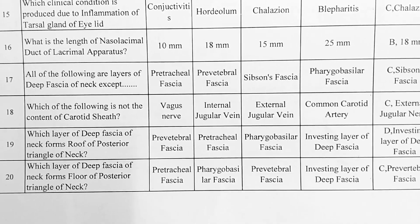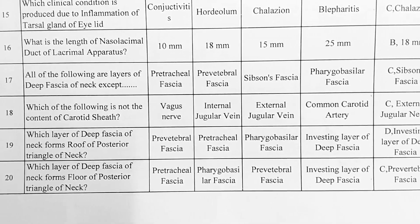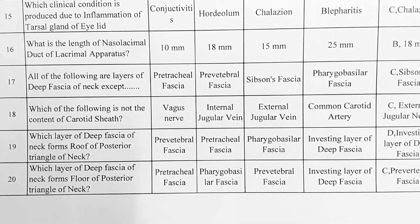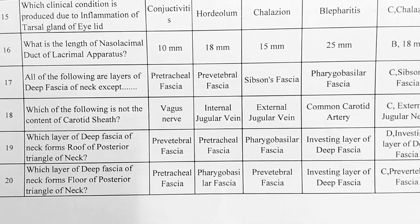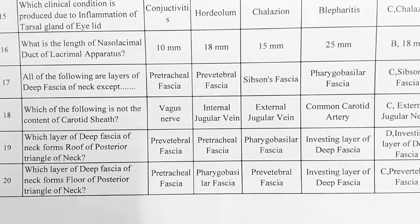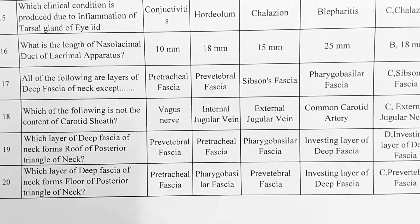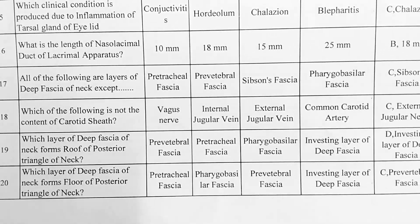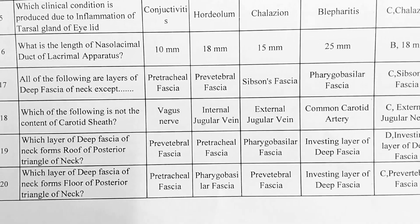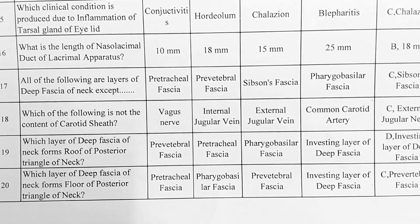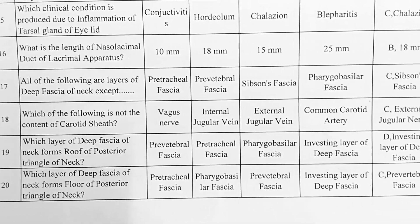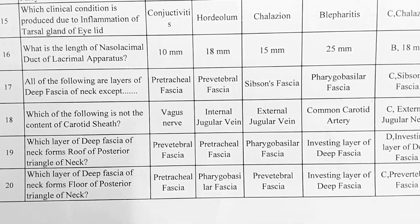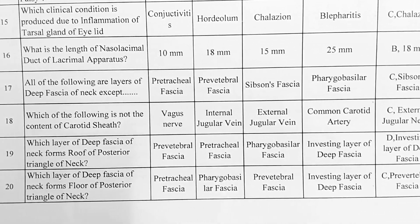Next. Which layer of deep fascia of neck forms the roof of the posterior triangle of neck? Options — A: prevertebral fascia, B: pretracheal fascia, C: pharyngobasilar fascia, D: investing layer of deep fascia. Option D is correct, investing layer of deep fascia.